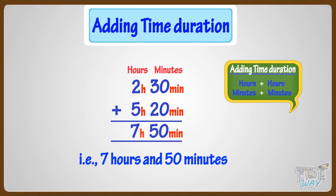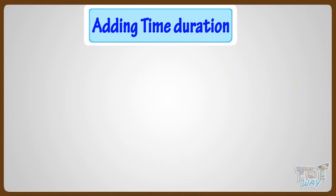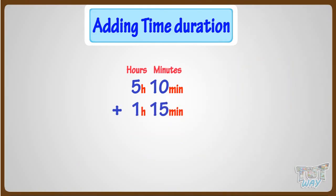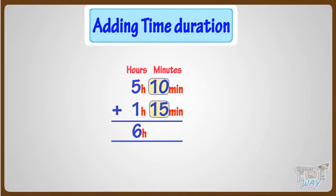Let's take another example. We have to add 5 hours 10 minutes to 1 hour 15 minutes. Adding hours, we get 6 hours, and adding minutes, we get 25 minutes. So our answer is 6 hours 25 minutes.